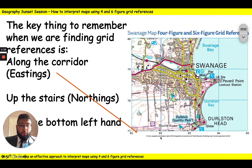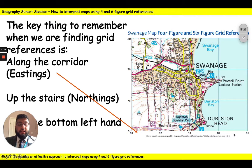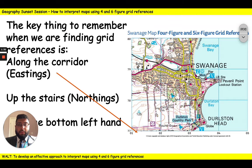So it could be 01, 02, 03, 04 and 05. The next rule is once we've found our easting, we always find our northing — or once we've been along the corridor, we always go up the stairs. That's when we find our northing. It's called a northing because it runs north to south.